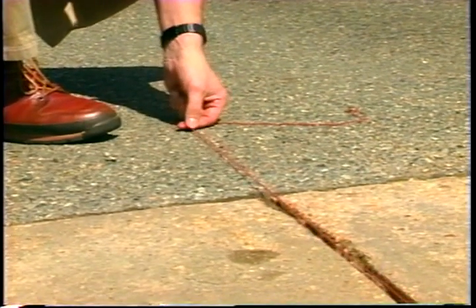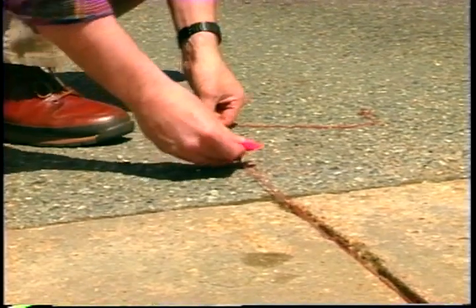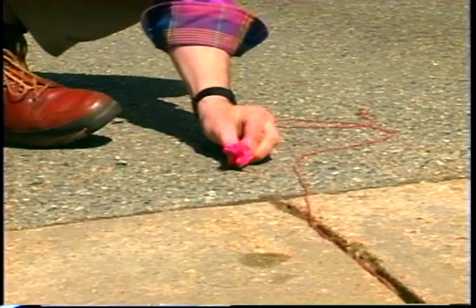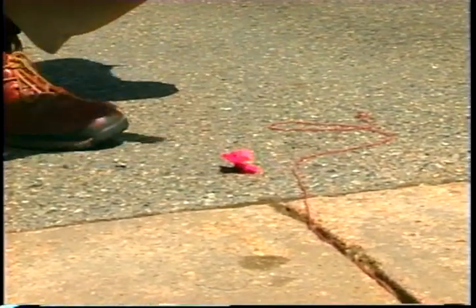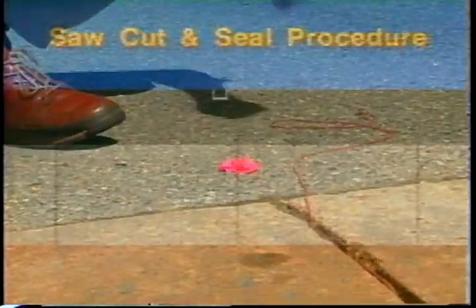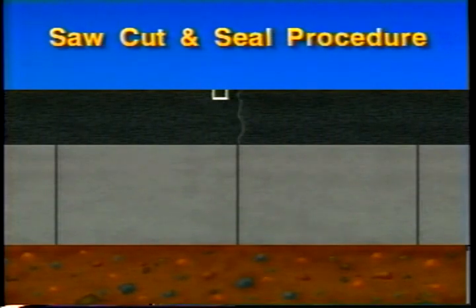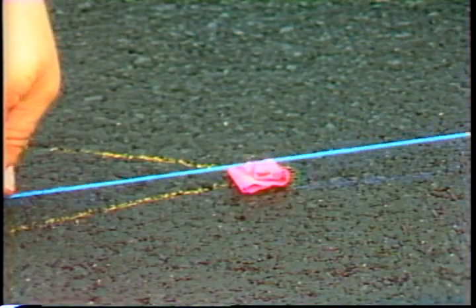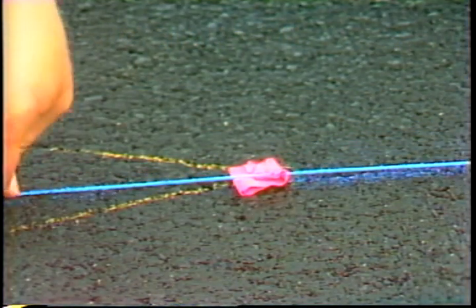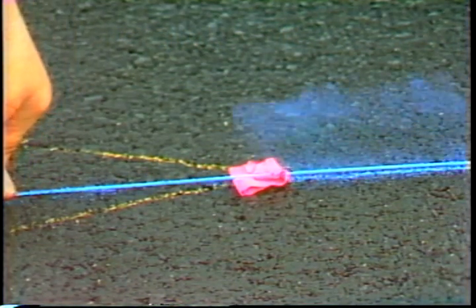Next, the concrete joints are located accurately using a fixed reference system such as stake hubs, iron pins, or curb markings. The reference system must be set up before placing the asphalt overlay. Misalignment of the saw cut by as little as three-quarters of an inch can result in a reflective crack appearing next to the misaligned saw cut. After the overlay is placed and compacted, the location of the underlying concrete joints is marked on the overlay using a painted or chalk line.